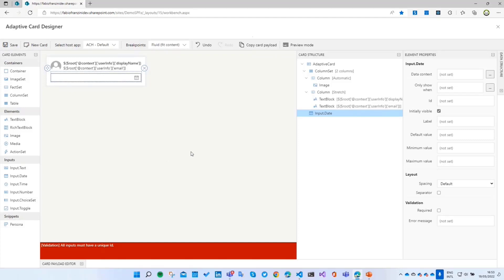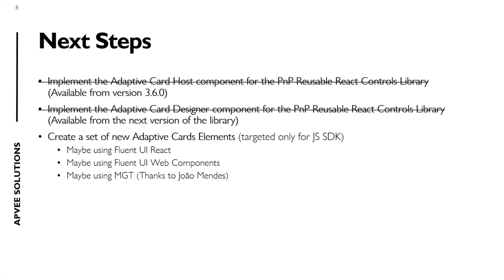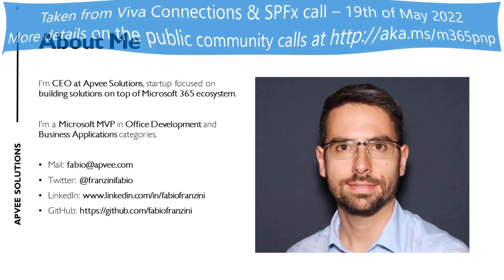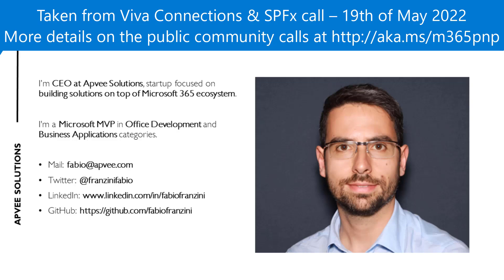So to wrap up, the next steps: the first step was the creation of the Adaptive Card host component — already done. Second, the Adaptive Card Designer component will be available in the next version of the library, with a PR opened next week. The really next steps are to create a new set of Adaptive Card elements using Fluent UI React, Fluent UI Web Components, or Microsoft Graph Toolkit, and use them directly inside the designer and the Adaptive Card host. If you want to contact me, you can use fabio@appv.com, or follow me on Twitter, LinkedIn, or GitHub.